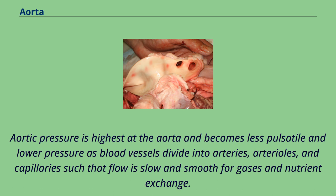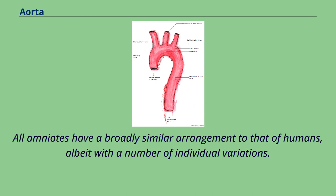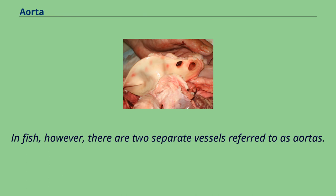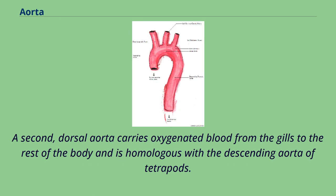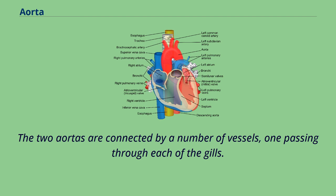All amniotes have a broadly similar arrangement to that of humans, albeit with a number of individual variations. In fish, however, there are two separate vessels referred to as aortas. The ventral aorta carries deoxygenated blood from the heart to the gills — part of this vessel forms the ascending aorta in tetrapods. A second, dorsal aorta carries oxygenated blood from the gills to the rest of the body and is homologous with the descending aorta of tetrapods. The two aortas are connected by a number of vessels, one passing through each of the gills. Amphibians also retain the fifth connecting vessel, so that the aorta has two parallel arches.